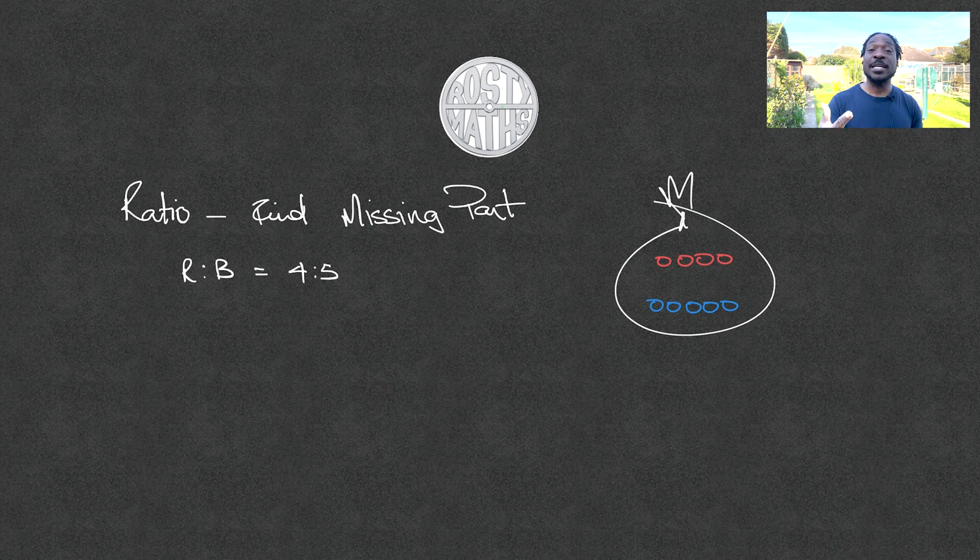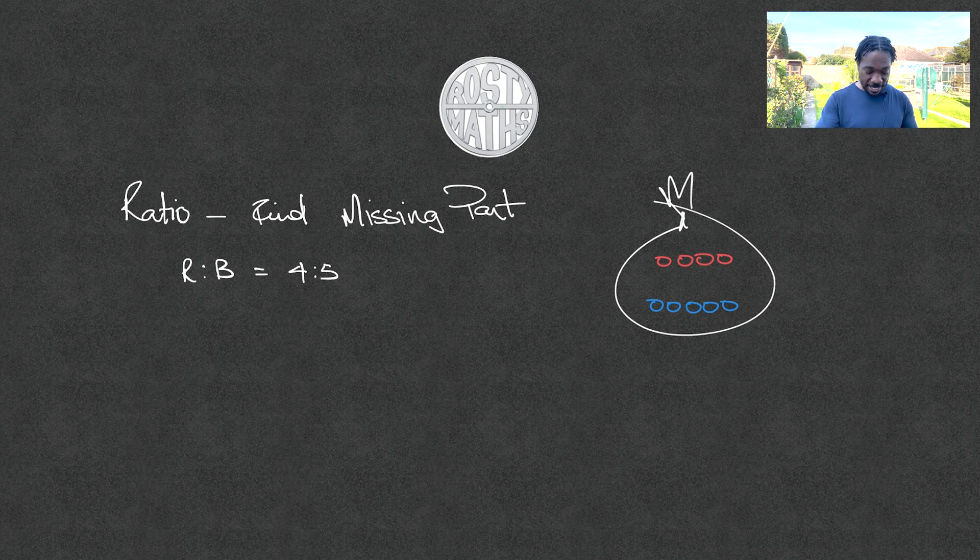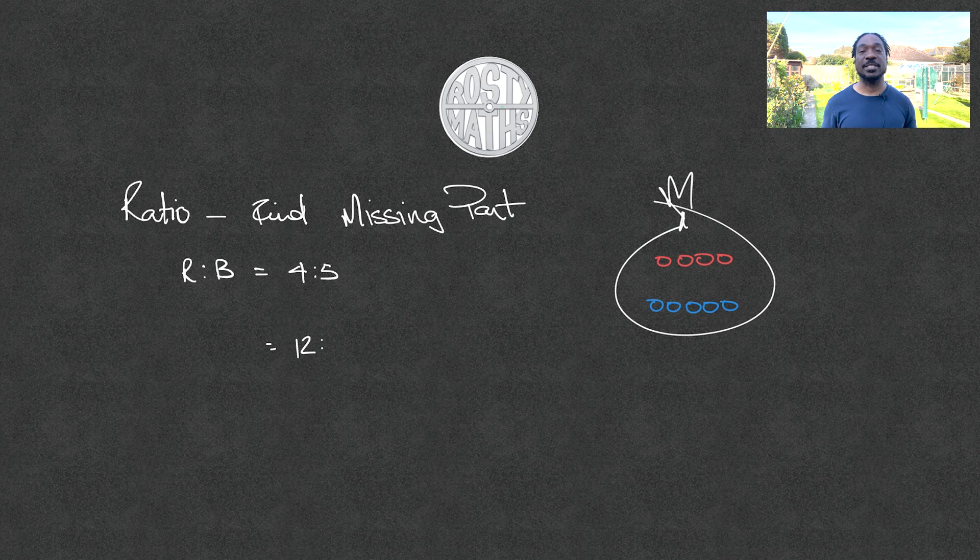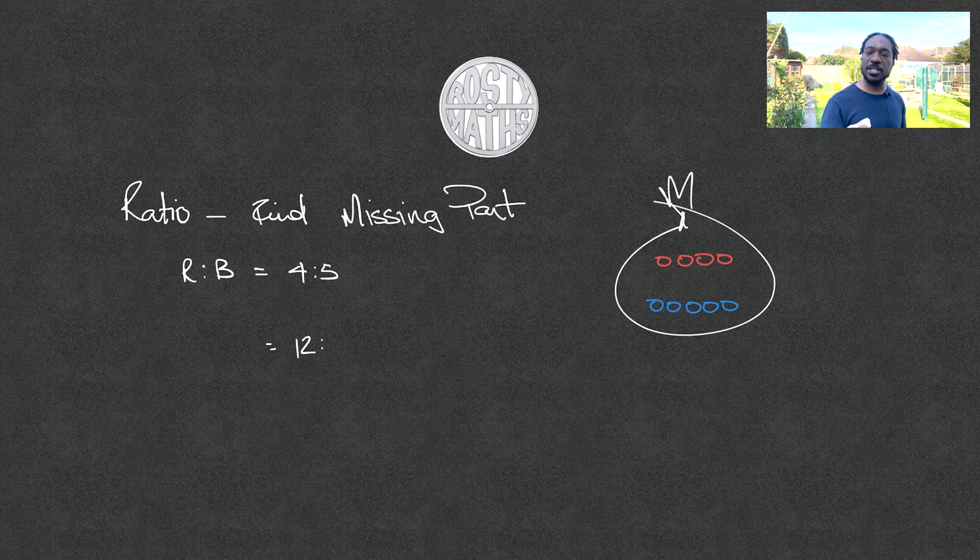Now, someone has come along and they have increased the number of red counters in my bag. So now I have got twelve red counters in my bag. In order to make sure that I have the same proportion of counters in the bag or the same ratio, they then ask me how many blue counters must be in that bag if I've got twelve.